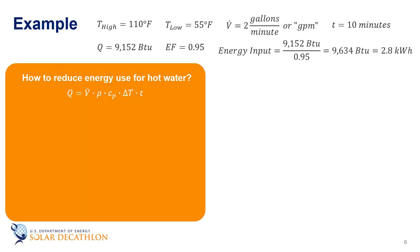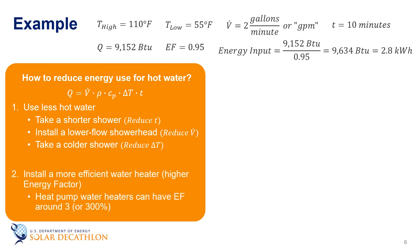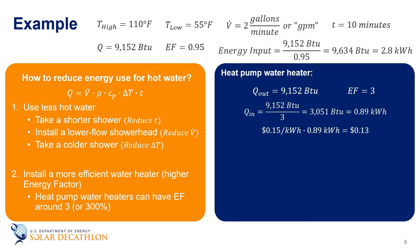How do we reduce this? There are only a few options. We could use less water, either with a shorter shower or a shower head that lets less water through, or we could take a colder shower. We could also install a heat pump hot water heater with a higher energy factor. If the energy factor of the example is 3, then the energy needed is now just over 3,000 BTUs or 0.89 kilowatt hours or a cost of 13 cents. That's quite a change from the 42 cents we started with.